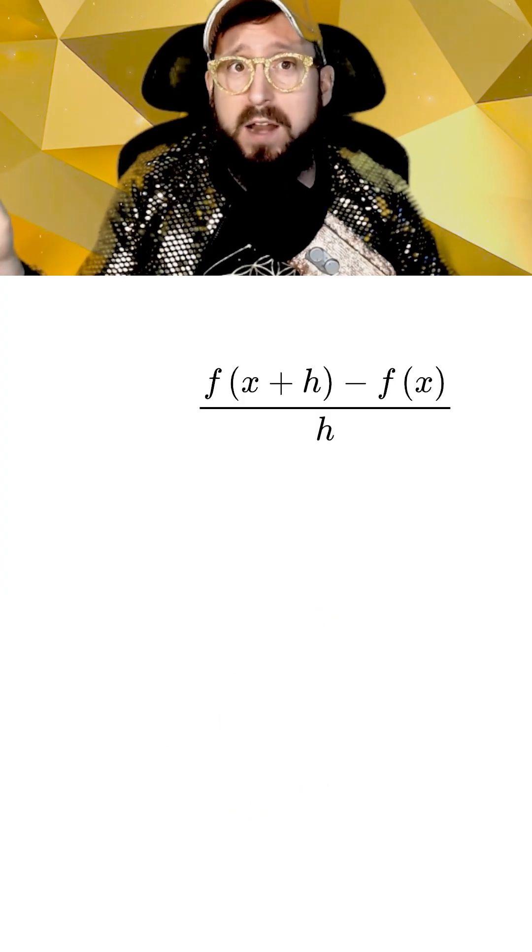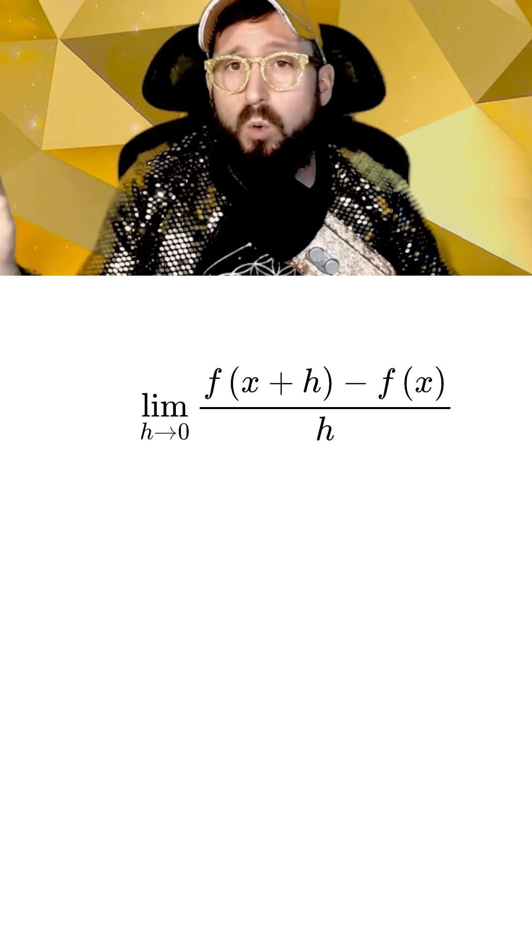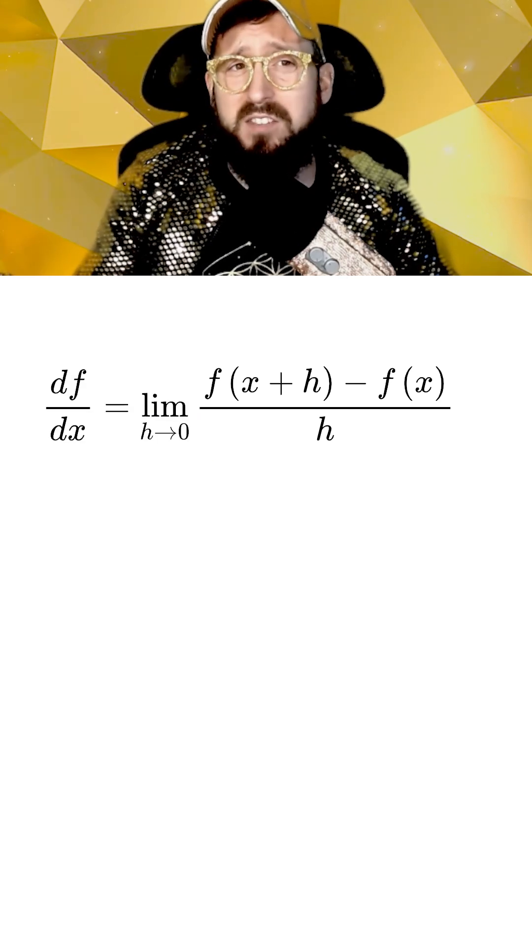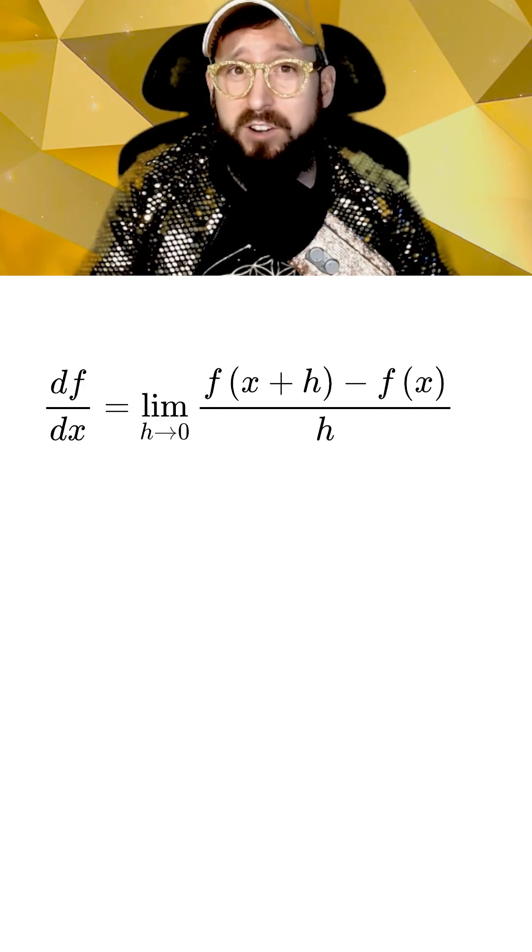The way to represent this in math is by writing our slope equation as a limit where h approaches zero. And this is what ends up being the same thing as the limit definition of a derivative.